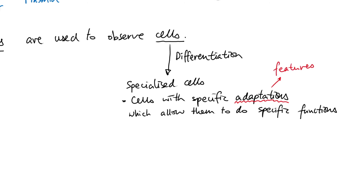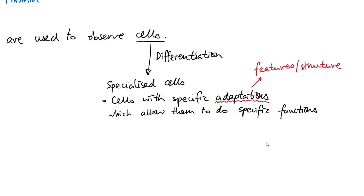There are quite a few different specialized cells you need to know: the sperm cell is a common one, hair cells are another popular one, and red blood cells, which you'll come across again in terms of the bloodstream and components in the blood. Make sure that you learn these examples as you do your actual revision.